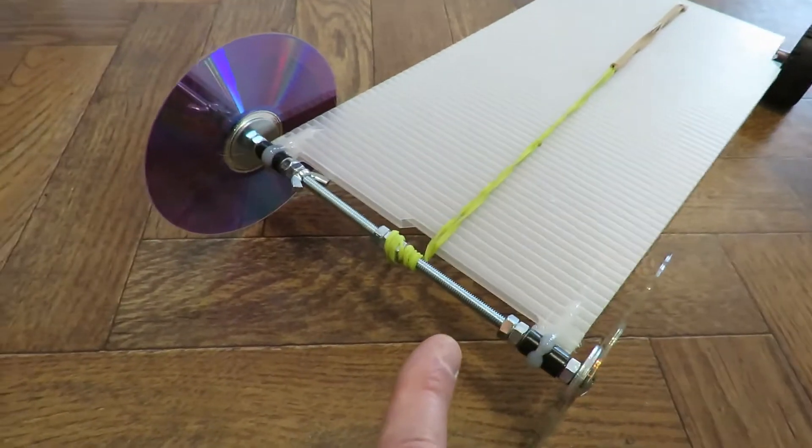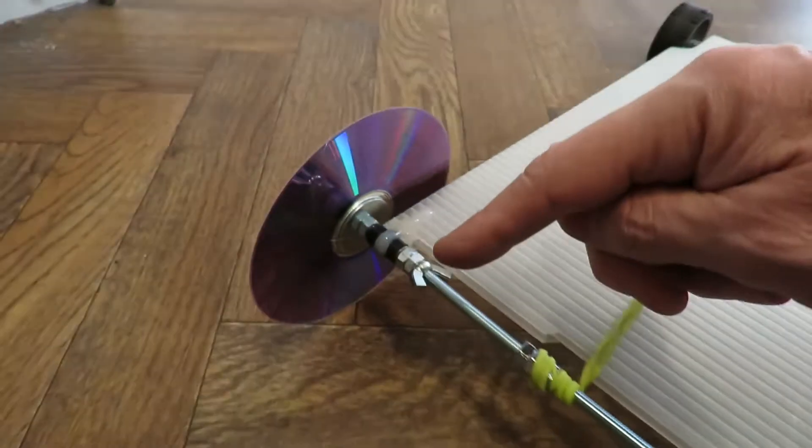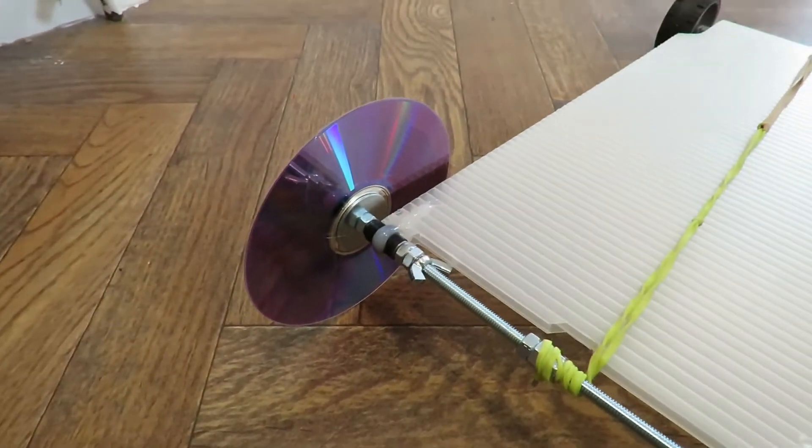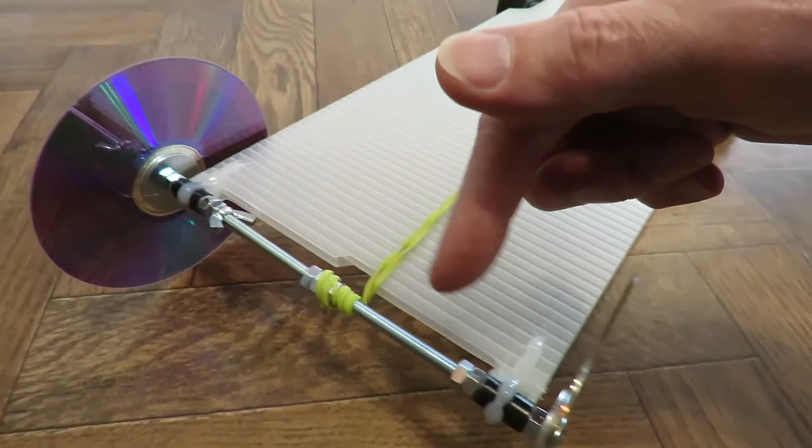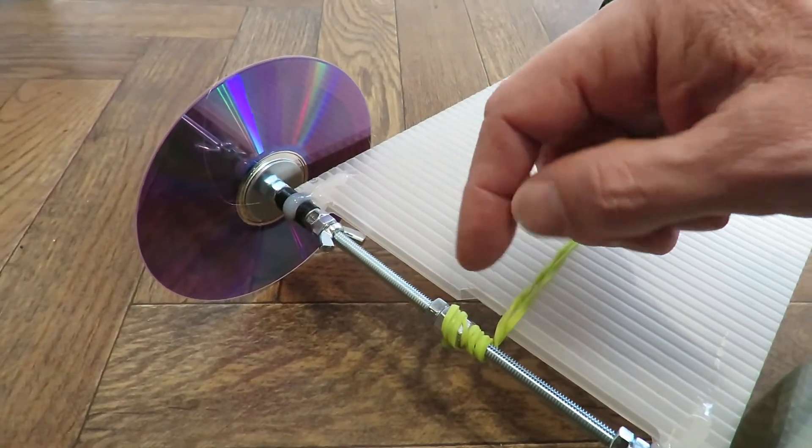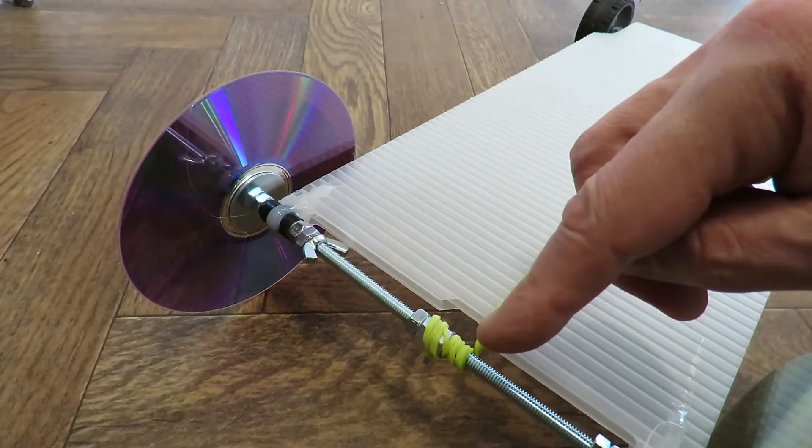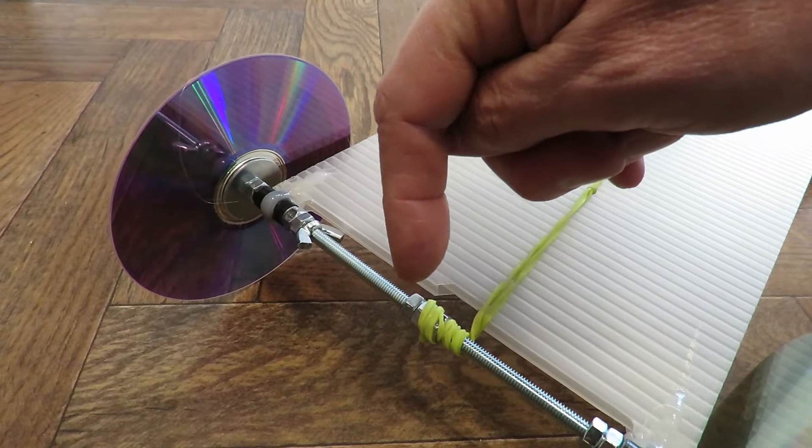What I would have liked was a bar, a threaded bar that I could put a wing nut on, but what I've actually got is two bolts end-to-end held together just by one nut. One bolt is threaded halfway in one way and one bolt threaded in halfway the other way.